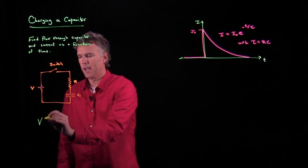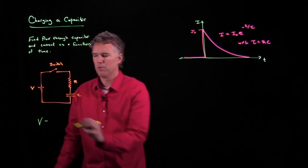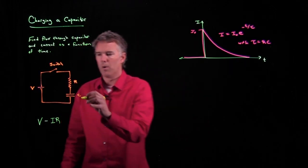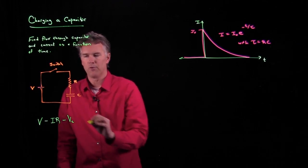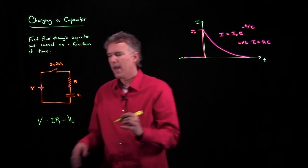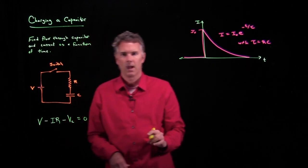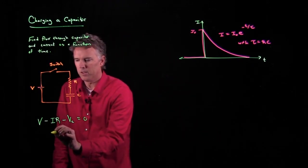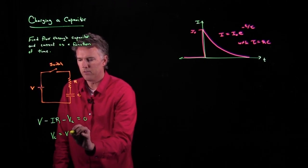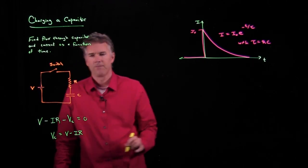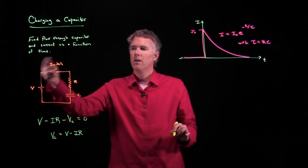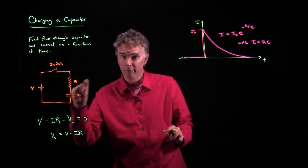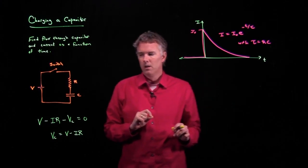If we start at V, we have potential V. When I go through the resistor, I have a drop of IR. When I go through the capacitor, I have a drop of VC, and then I'm back to zero. I'm back to exactly where I started. So let's just take this equation now and solve it for VC. VC is therefore just V minus IR. It's whatever voltage you have here minus the current through the resistor. That's what's left over to charge up the capacitor, or I should say that's the voltage across the capacitor.